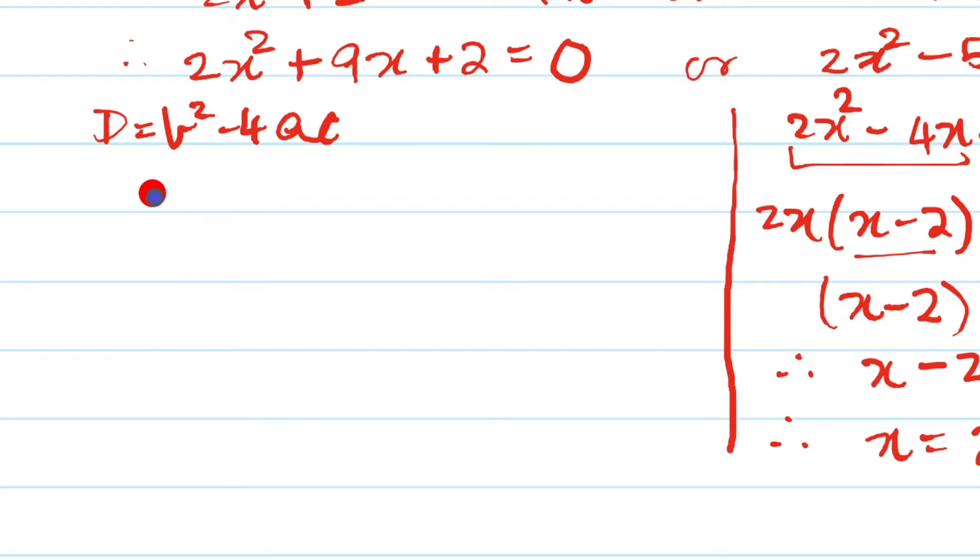So let us see our discriminant will be b² means b is this coefficient of x means 9, 9² minus 4 into a is this and c is this. If you do not understand what I am talking about then you look at my video of quadratic equations how to solve them and that will give us 81 minus this is 4×4=16 that gives us 65.